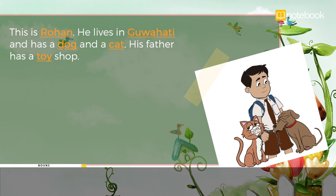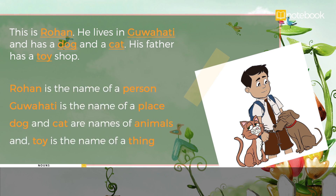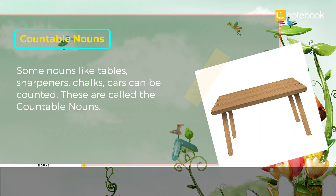a toy shop. In the above sentences, Rohan is the name of a person, Guwahati is the name of a place, dog and cat are names of animals, and toy is the name of a thing.